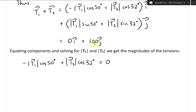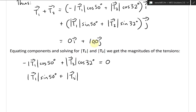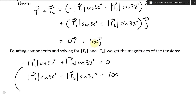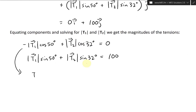From the first equation, we solve for T2. Moving the T1 term over and dividing by cosine 32, we get T2 = |T1| cosine 50° / cosine 32°.